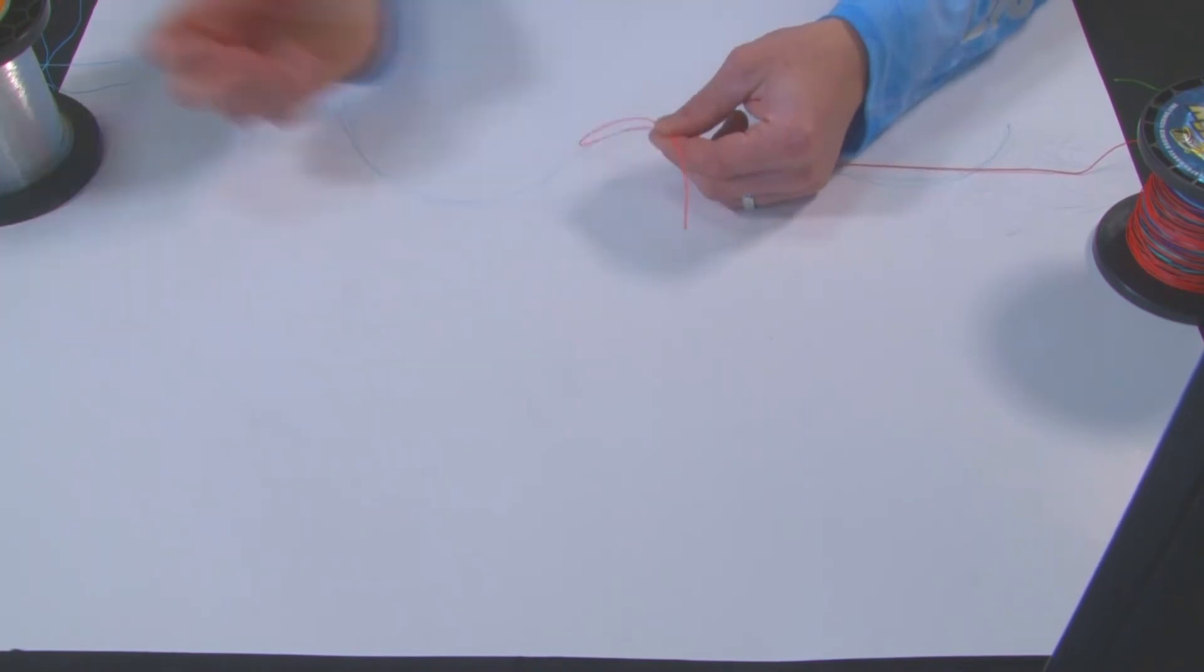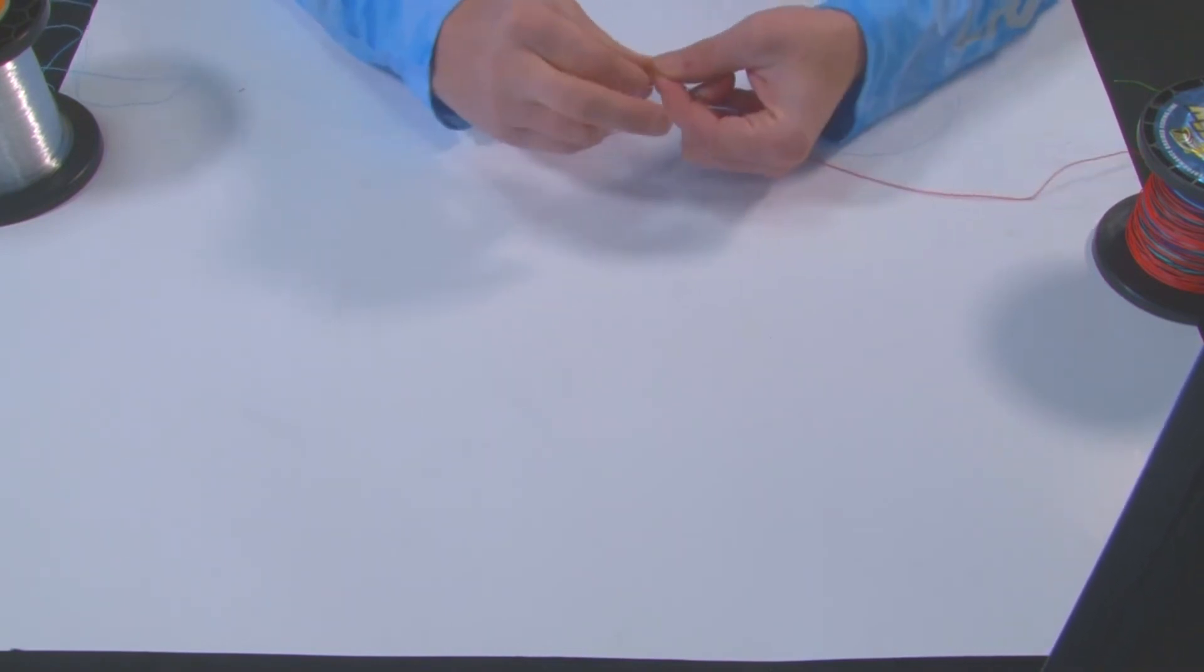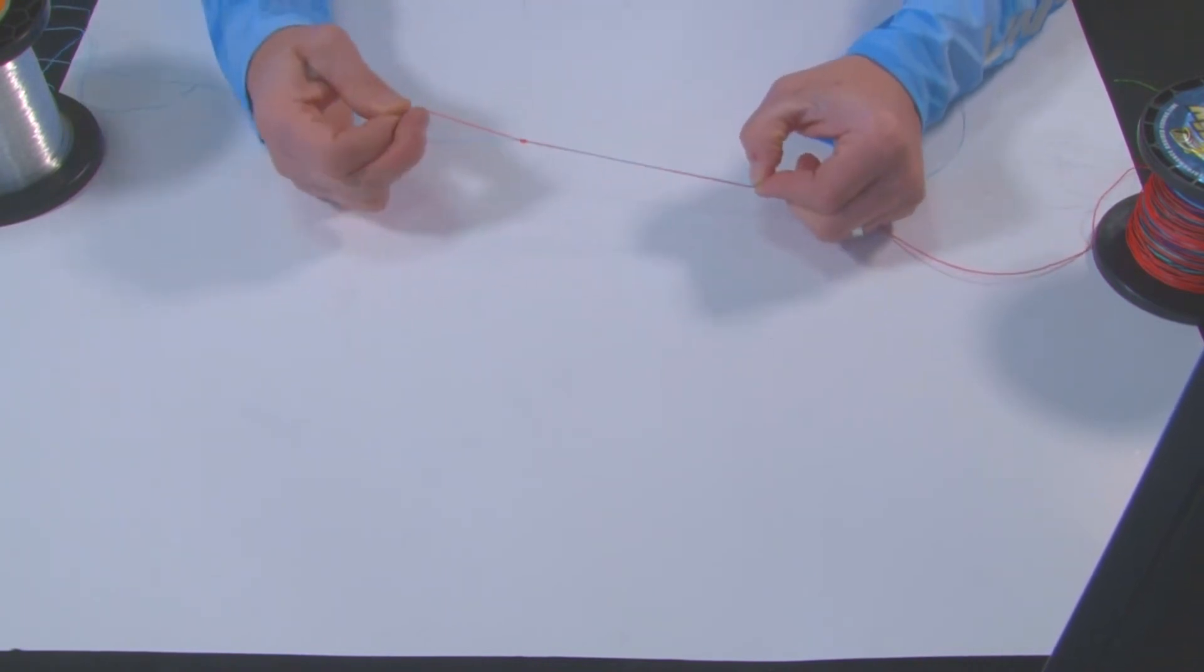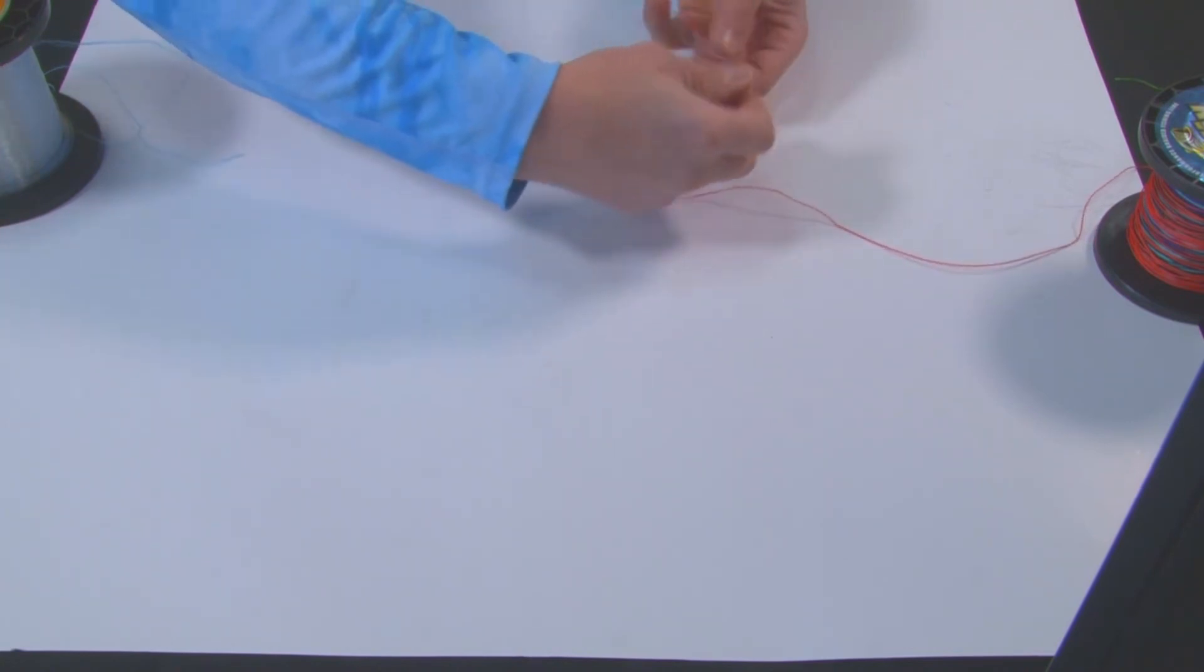Make our loop. First piece, hold there, go around, tighten that up. That's done. Go to the other side, same thing, uni uni.